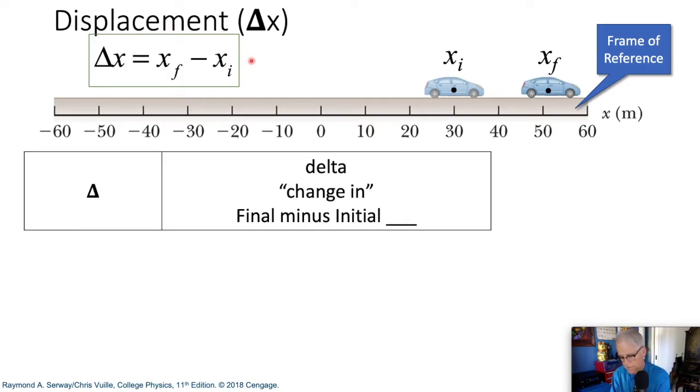First off, we have this delta. This delta, we can read as change in. It's the final minus initial, whatever is after that. And in this case, what's after that is the x. The x is position.